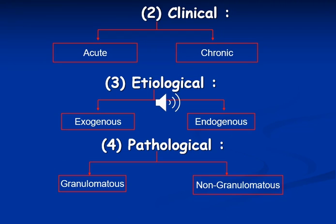Clinical classification is based on the duration of uveitis. If it is more than six weeks it will be chronic uveitis, and if less than six weeks it will be acute uveitis. The etiological classification is classified according to whether the cause is exogenous or endogenous. Pathological classification divides uveitis into granulomatous or non-granulomatous.